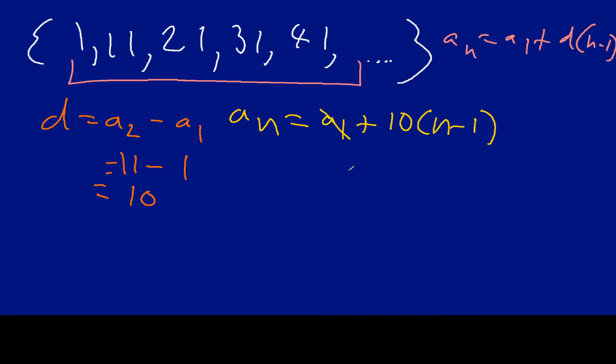So a sub 1 is going to come out to be 1, and it's going to be plus 10n, 10 times n is going to be 10n, and then 10 times negative 1, just distributing here, is going to be minus 10.